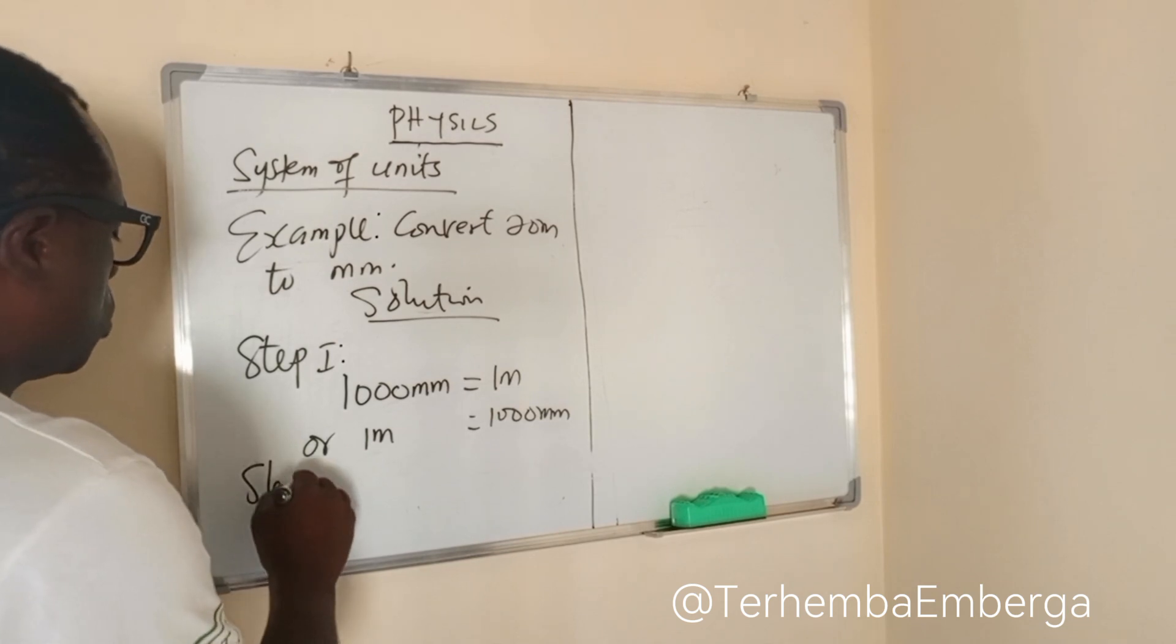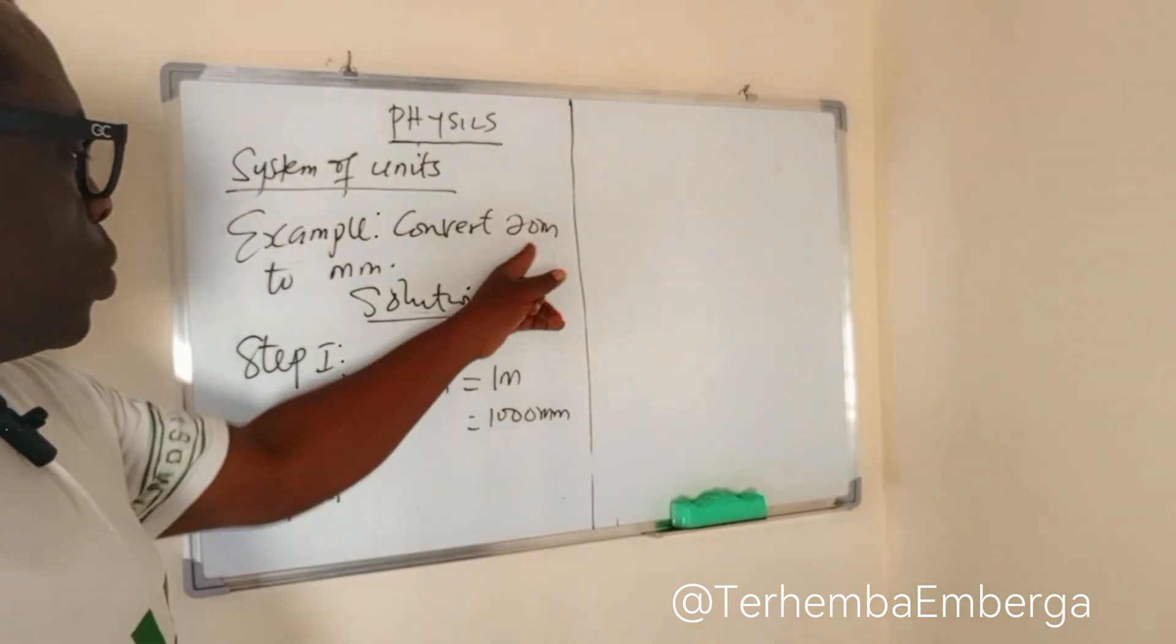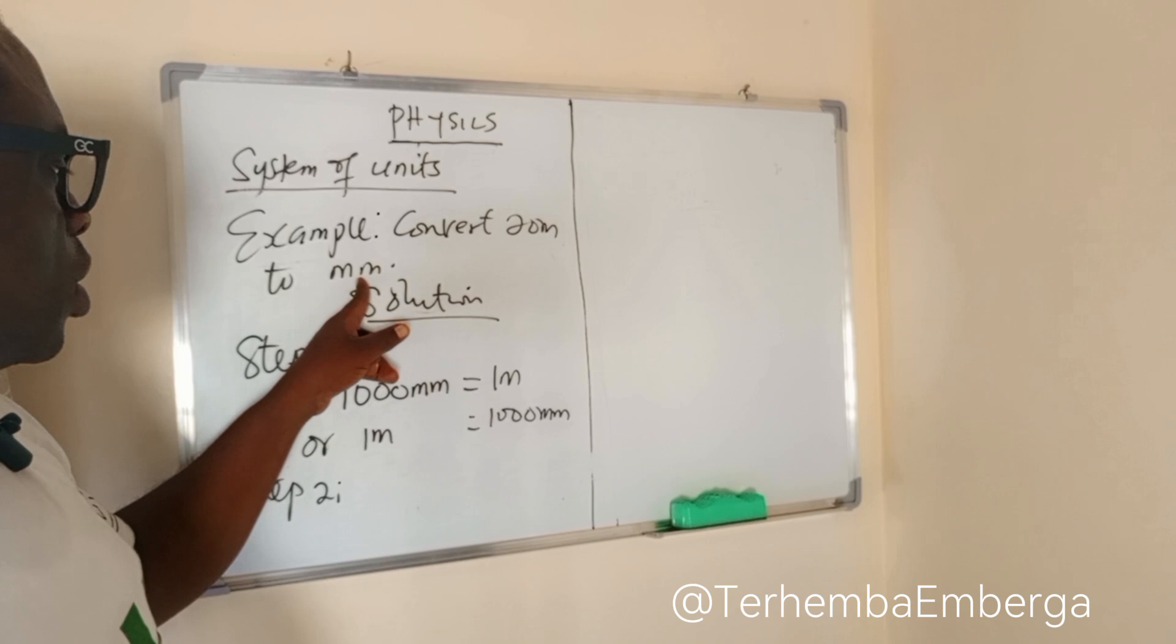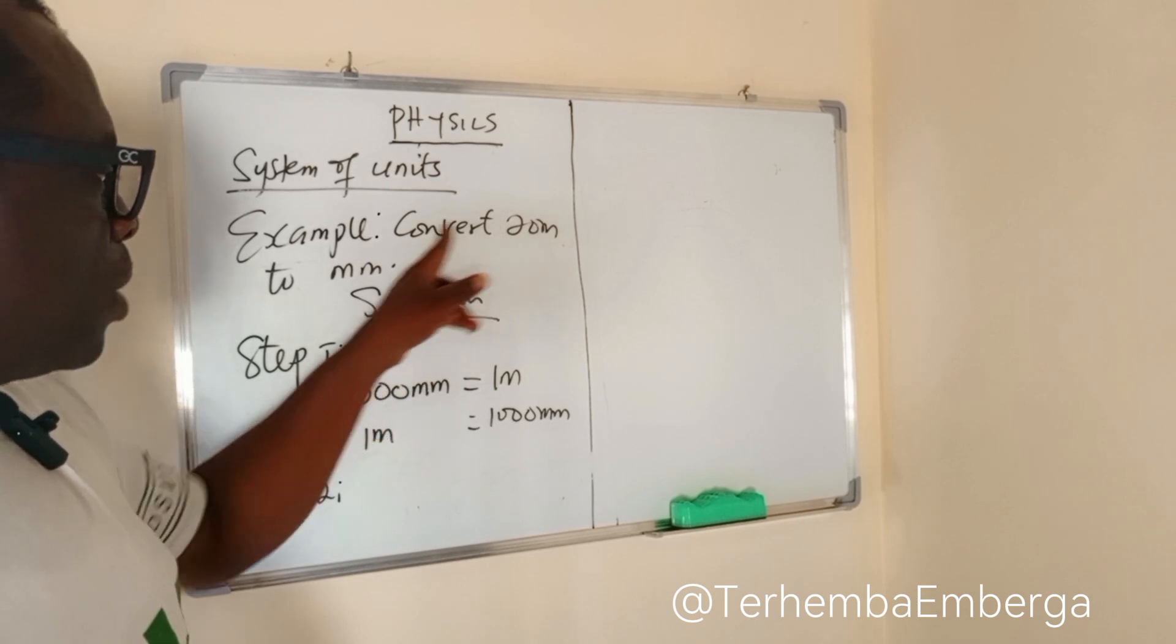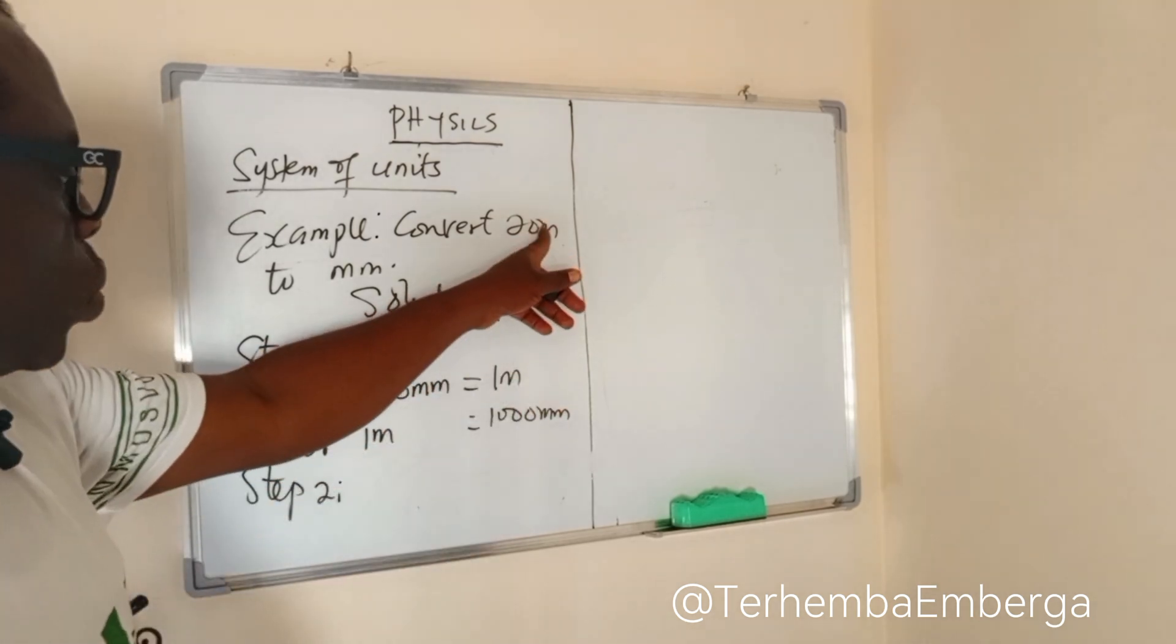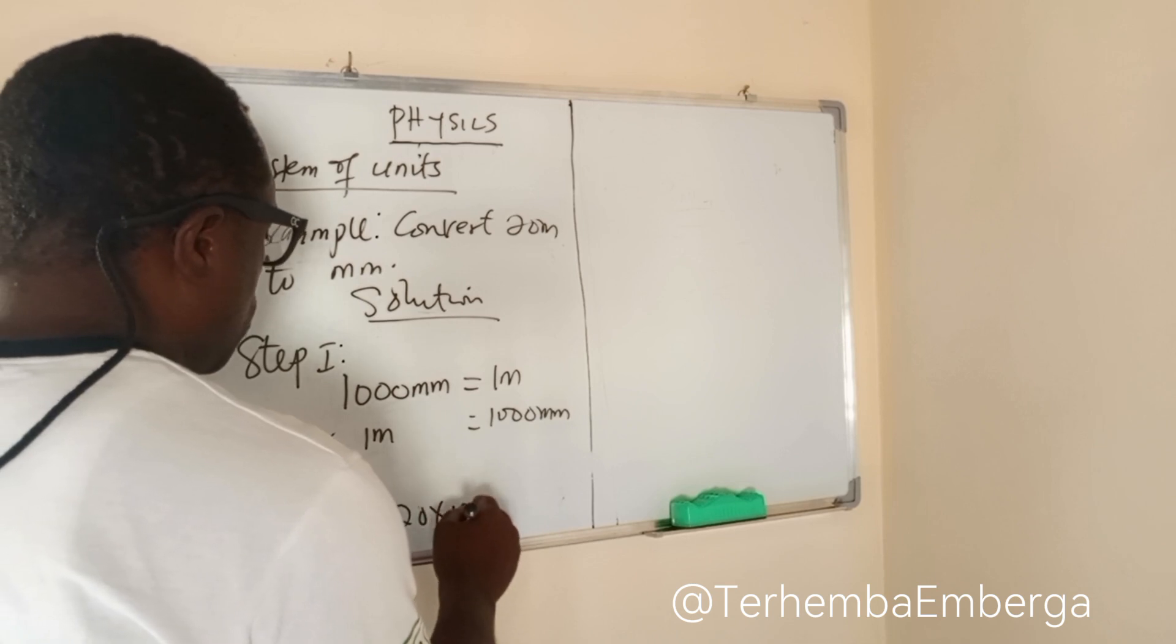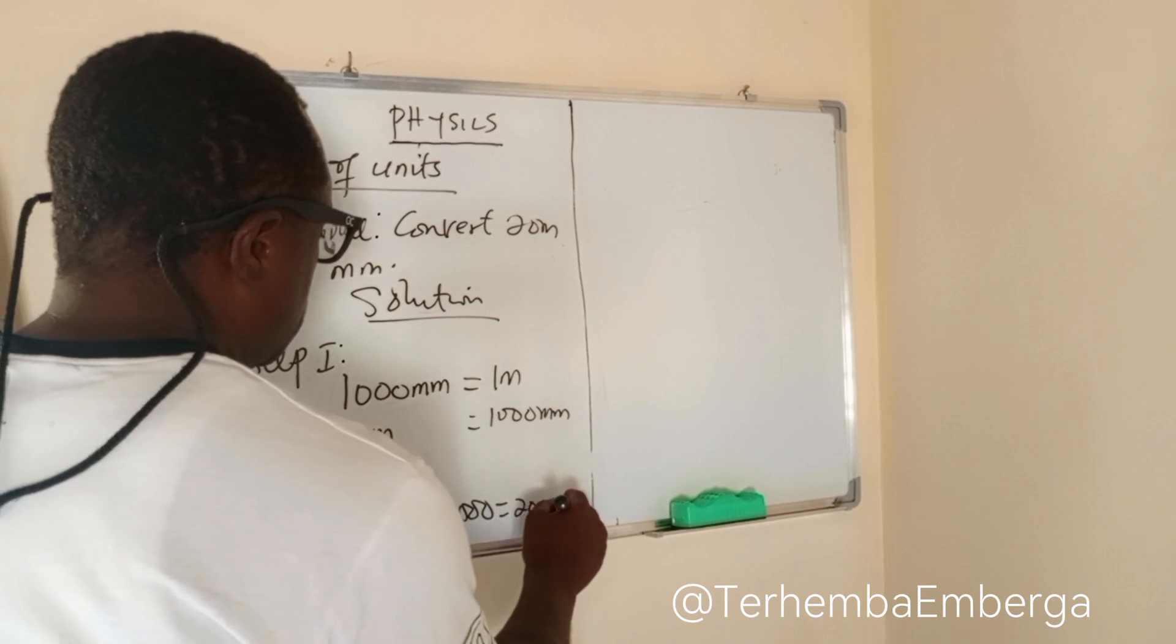Step 2. You now ask yourself, among these two units, which one is big, which one is small? In this case, meter is a bigger unit. This is a smaller unit. And in this case, you are converting from a big to a small unit. So you simply multiply 20 by 1,000. That is 20 times 1,000. And that gives us 20,000 millimeters.